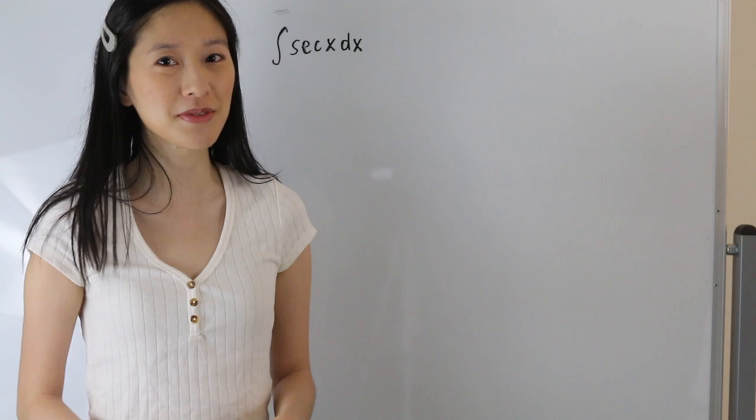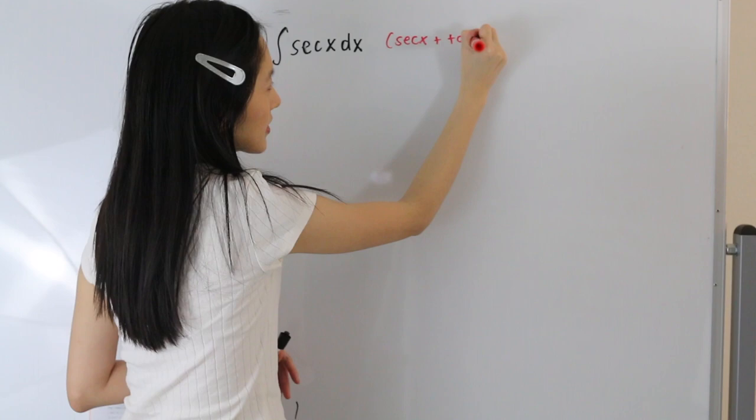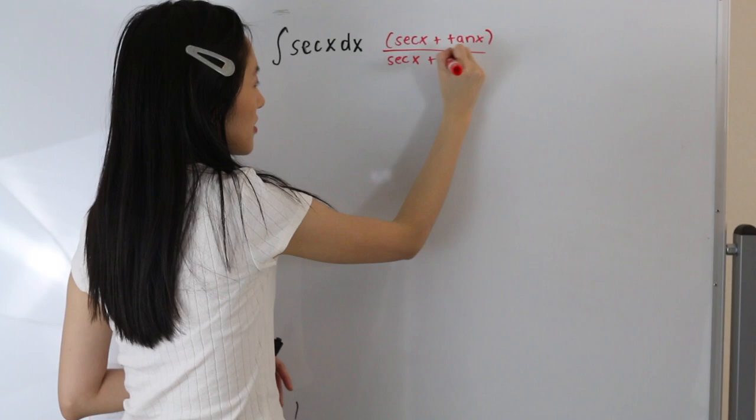So the first thing that we're going to want to do is multiply by the following: secant of x plus tangent of x over secant of x plus tangent of x.